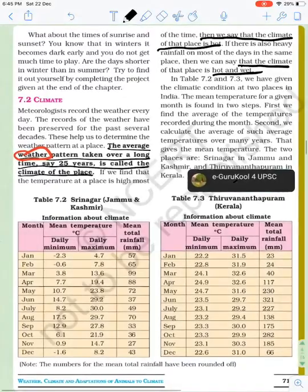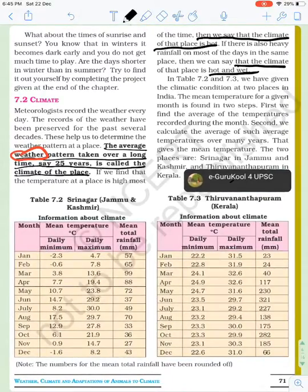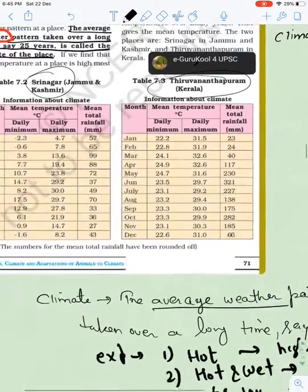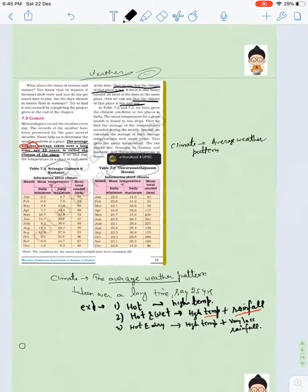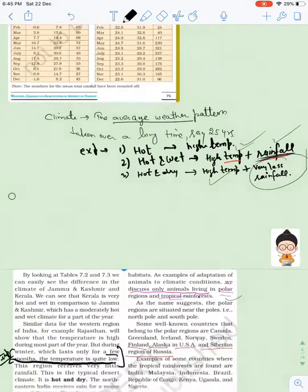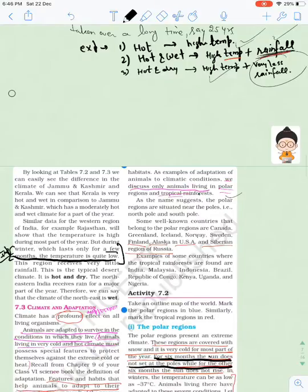Here examples are given of Srinagar and Thiruvananthapuram, Kerala's capital. Climate can be of different types - hot climate where there is high temperature, hot and wet where there is high temperature with good rainfall, and hot and dry where there is high temperature but no rainfall.